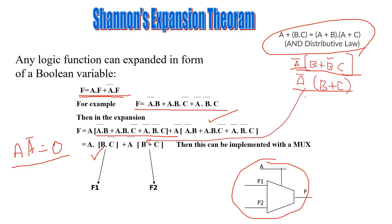This can be implemented by using a multiplexer. The select line is A. If A is 1, it will select F1, which is BC̄. If A is 0, it will select F2, which is B plus C. This is the control sequence, which will generate the output F. This is the way we implement a logic function using Shannon's Expansion Theorem.